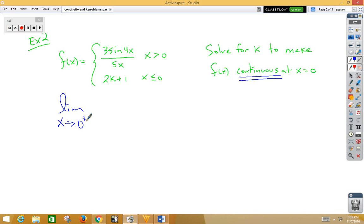We take the limit as x approaches 0 from the right side of 3 sin 4x over 5x is equal to the limit as x approaches 0 from the left side of 2k plus 1.